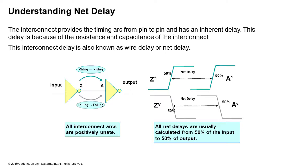This interconnect delay is also known as wire delay or net delay. All of these interconnects are naturally positively unate, and net delays are typically calculated from 50% of the input to 50% of the output. The timing arc of the net connects the pin-to-pin timing arcs of the cells, and when combining all timing arcs into one path, you traverse through nets and cells depending on the transition — rising to falling, falling to rising, rising to rising, or falling to falling.